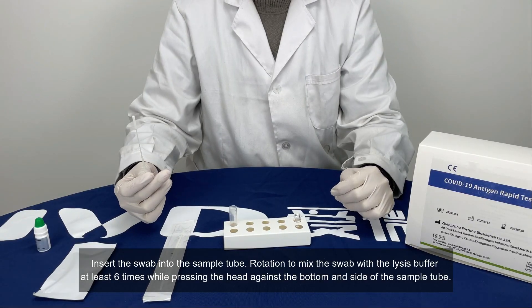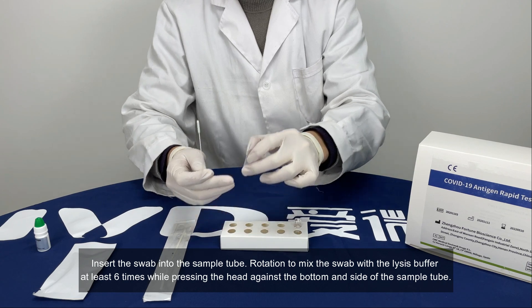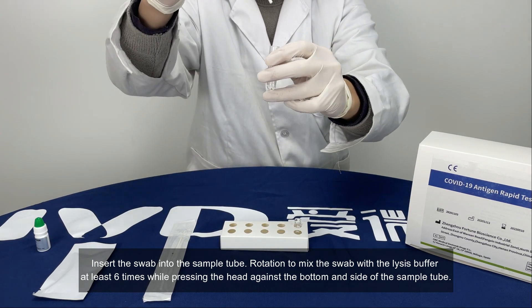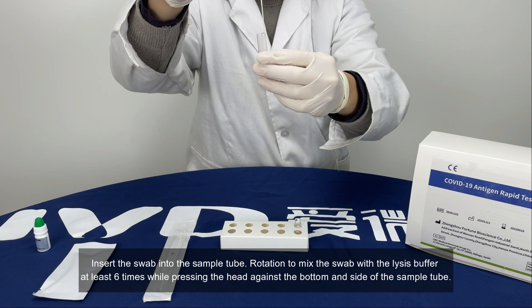Insert the swab into the sample tube. Rotate to mix the swab with the lysis buffer at least six times while pressing the head against the bottom and side of the sample tube.